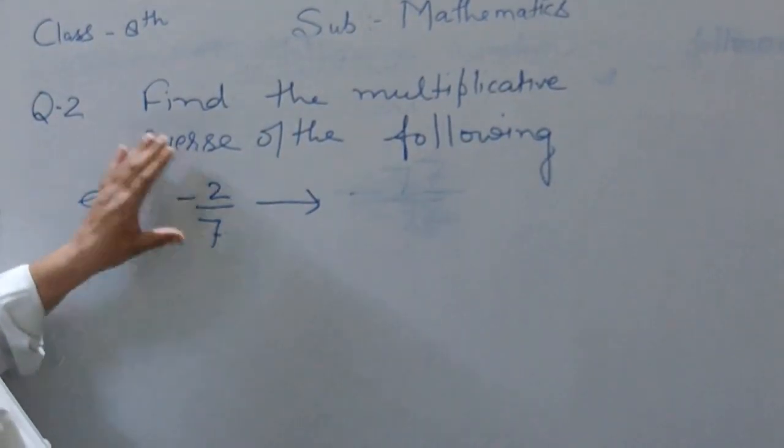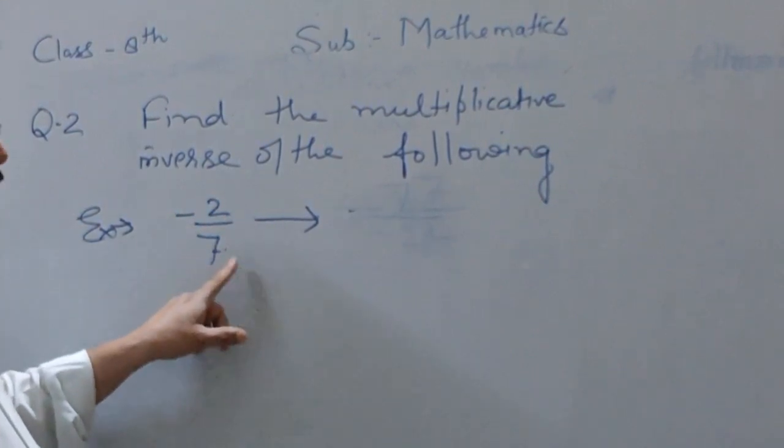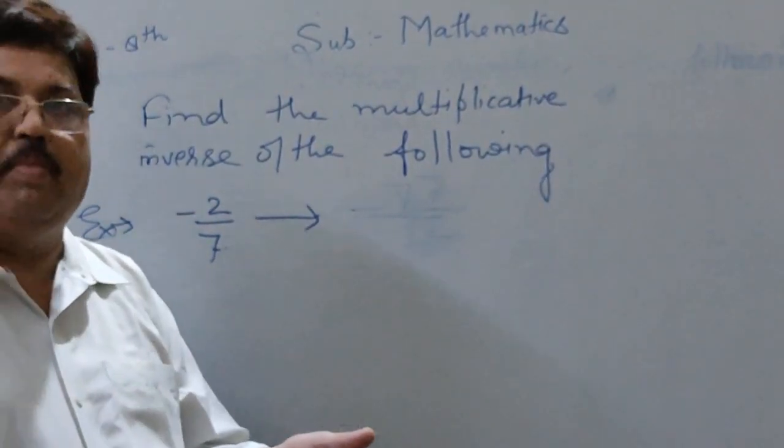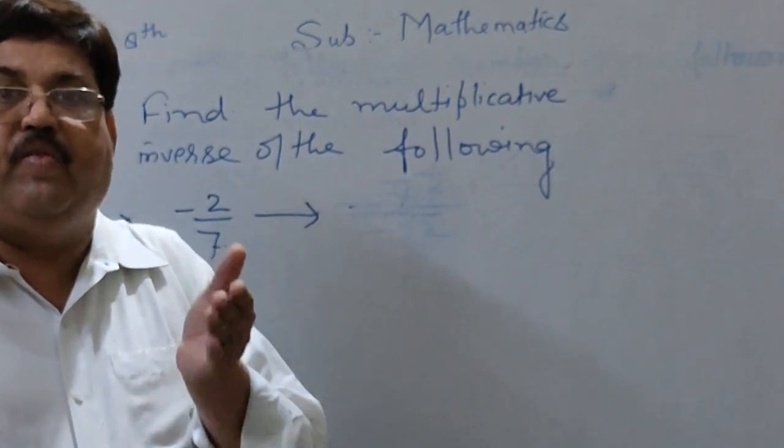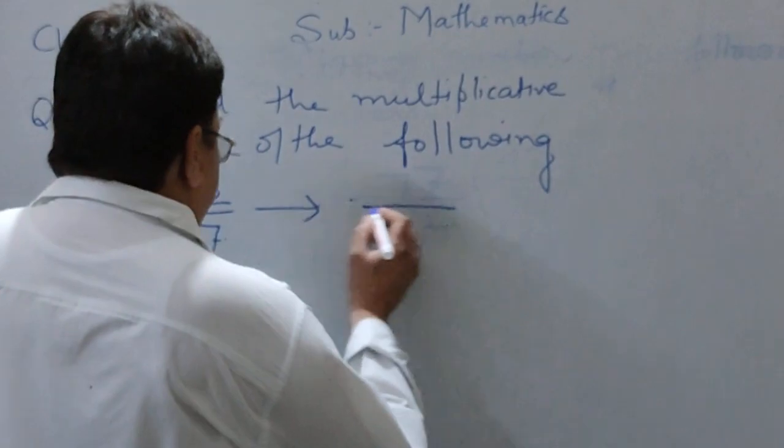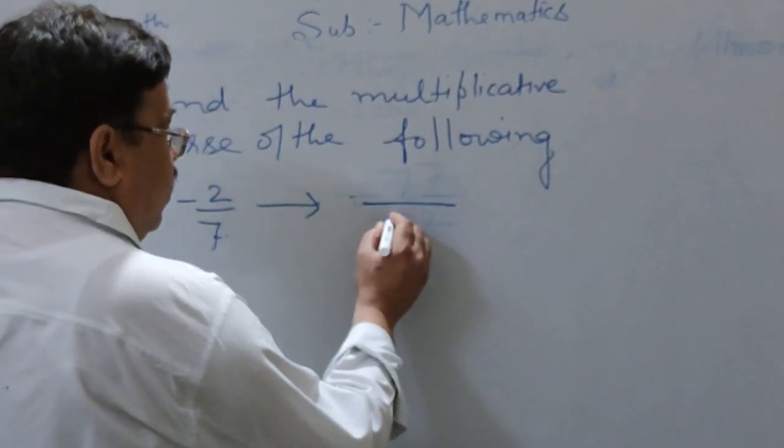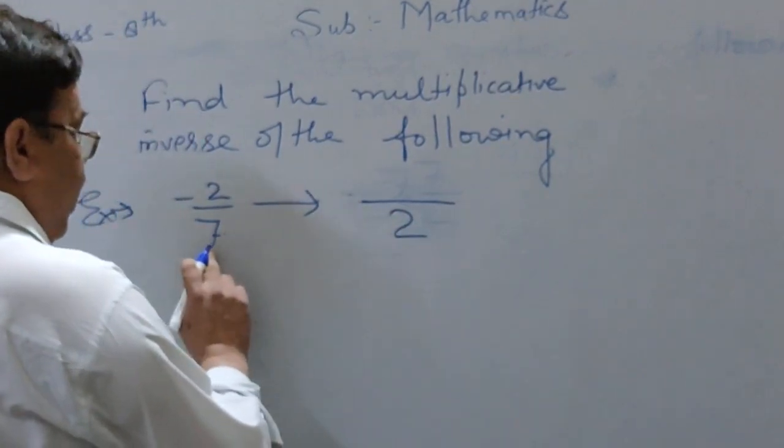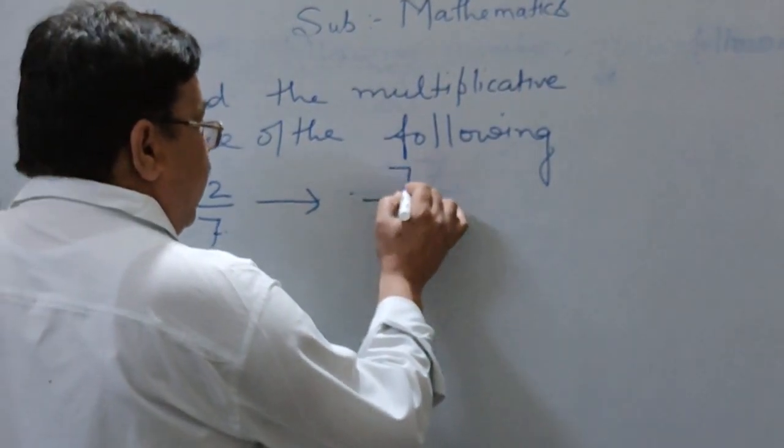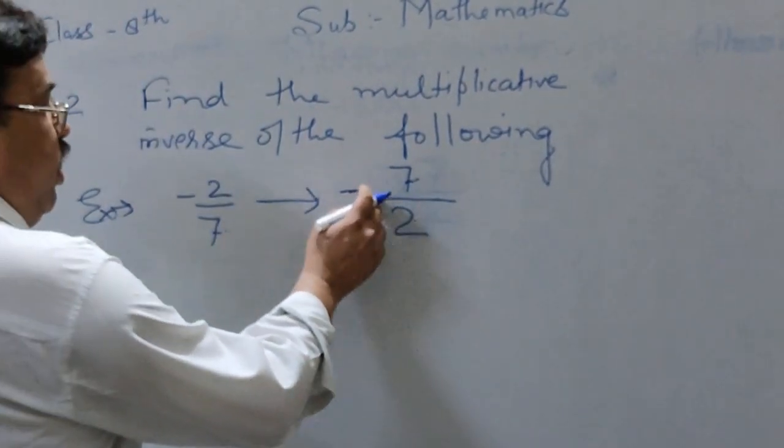Example number first, in this example, 2 by 7, how to write this number in the multiplicative inverse form. So, first of all, the numerator becomes denominator and denominator becomes numerator, and put the sign before the number.